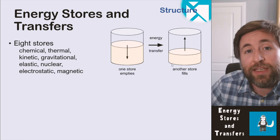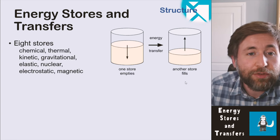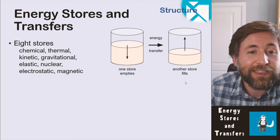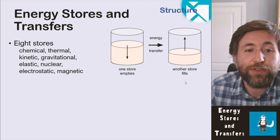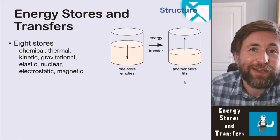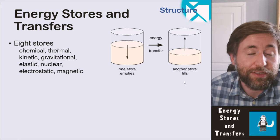There are eight ways we can store energy — eight stores. They are: chemical, thermal, kinetic, gravitational, elastic, nuclear, electrostatic, and magnetic. Memorise them.